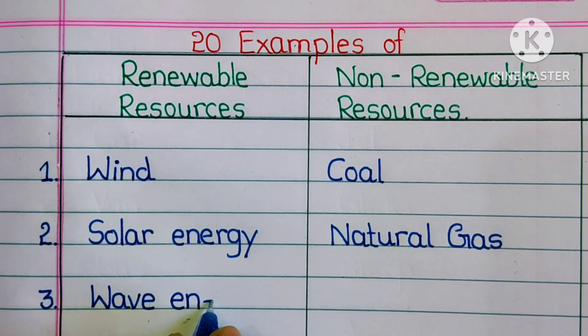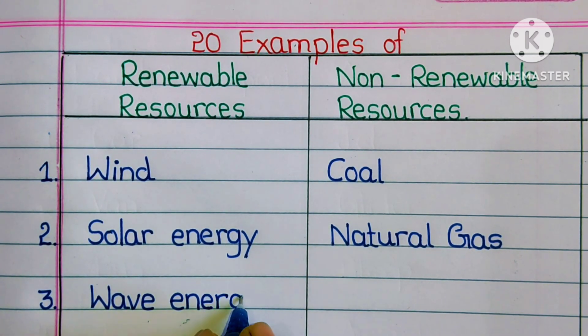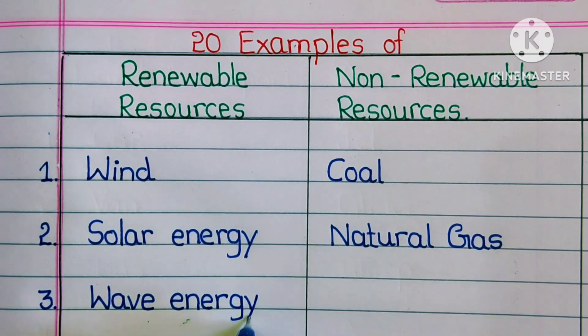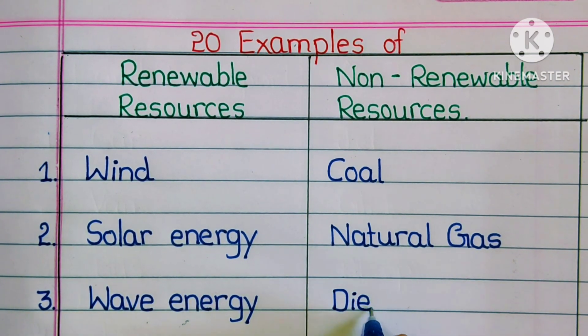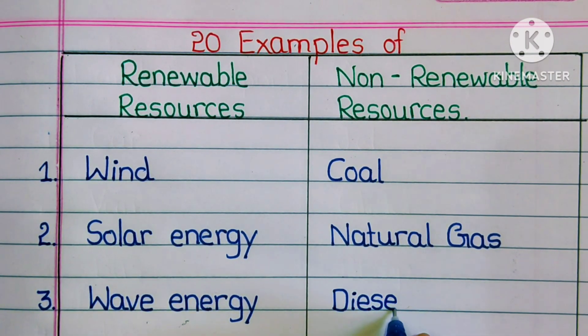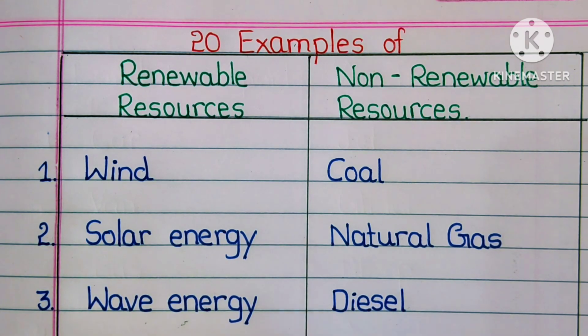Second one non-renewable resource is natural gas. Third one: wave energy is a renewable resource, and non-renewable resource is diesel.